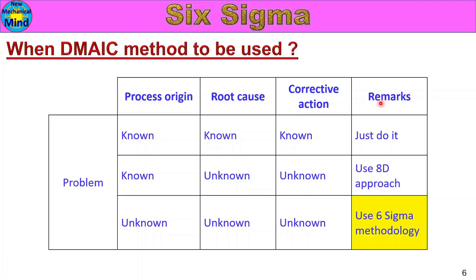Now, looking at the table headings: if you know the process, the root cause, and the corrective action — just do it, implement the action directly. Second case: if you know the process and the root cause but not the corrective action, use the AD approach.